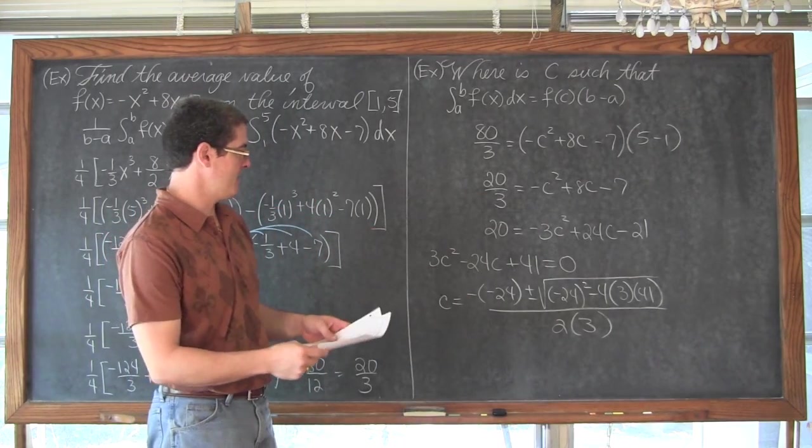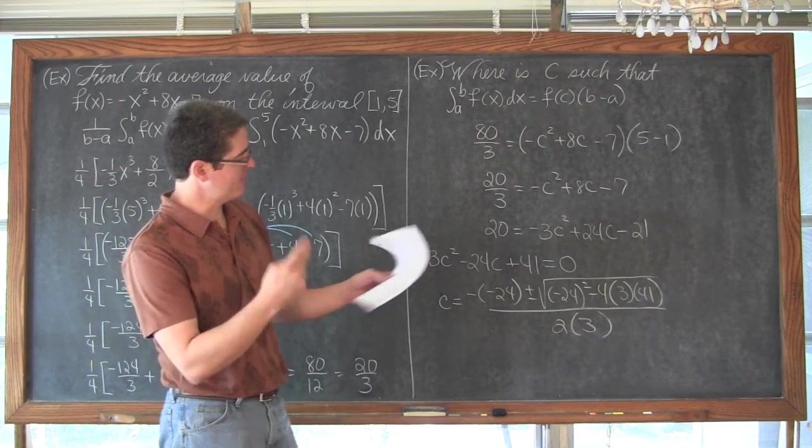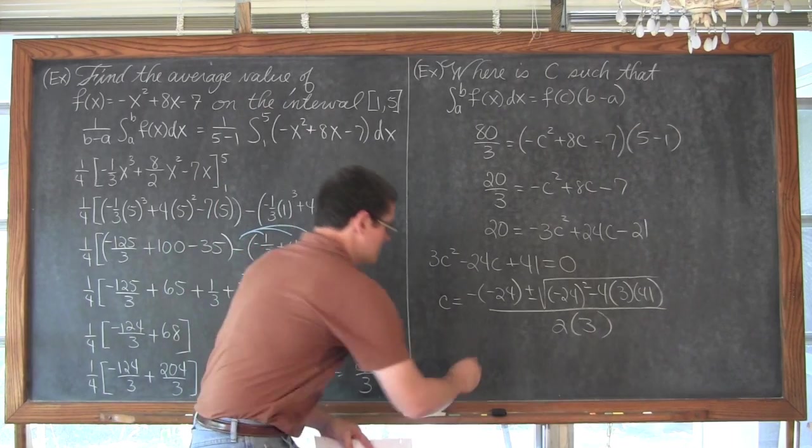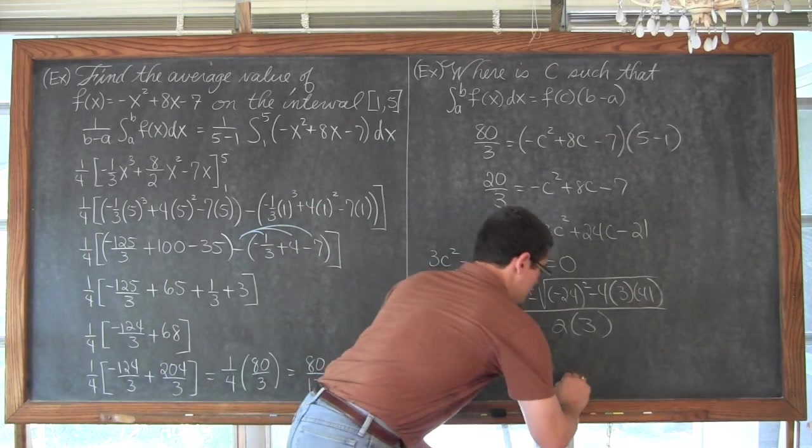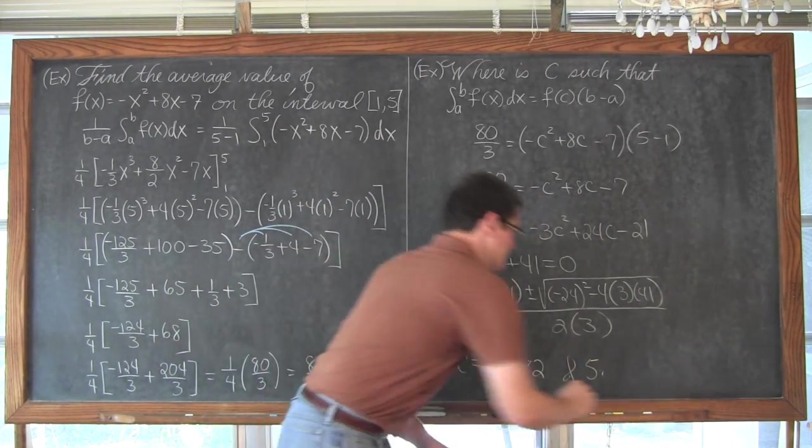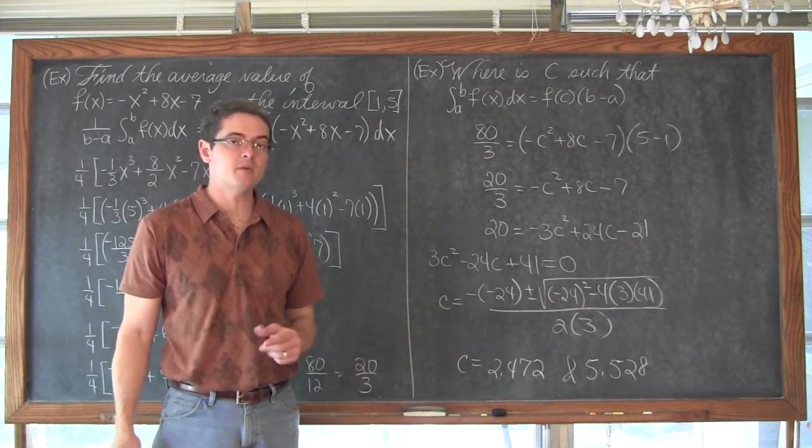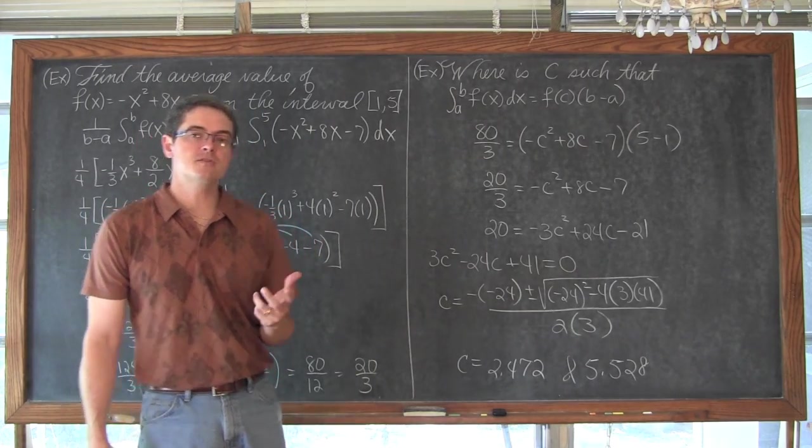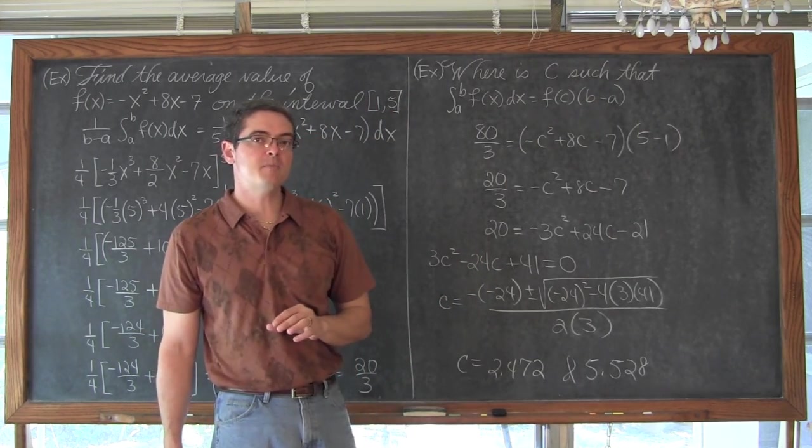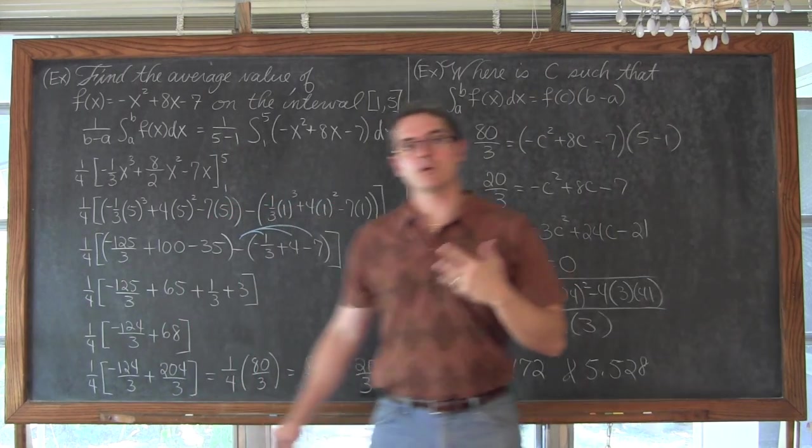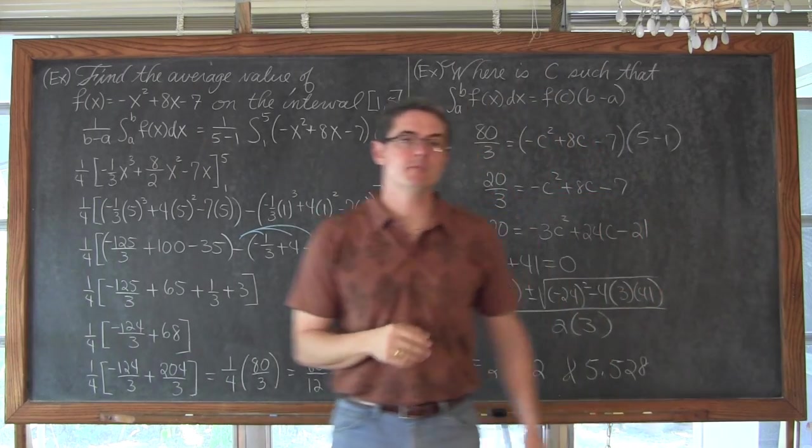And when you finish solving this, what we end up with is c is equal to 2.472 and 5.528. So, when we go ahead and solve that quadratic formula, we do get two answers. So, there are just possibly two places, two values of c where this equation is true, where the definite integral is equal to f of c times b minus a. But, our definite integral, our closed interval, what the question was concerned with was the closed interval between 1 and 5.